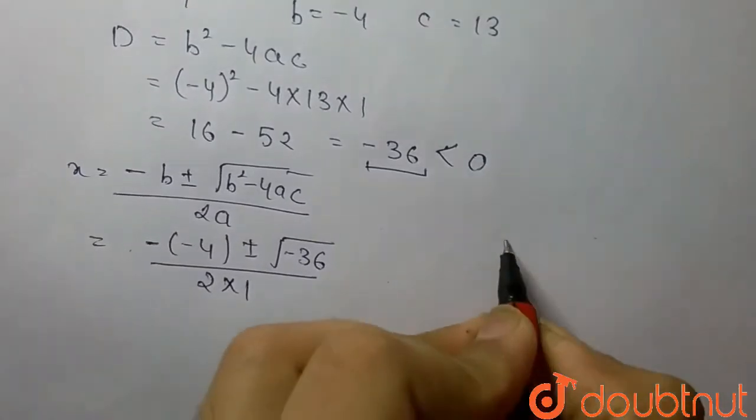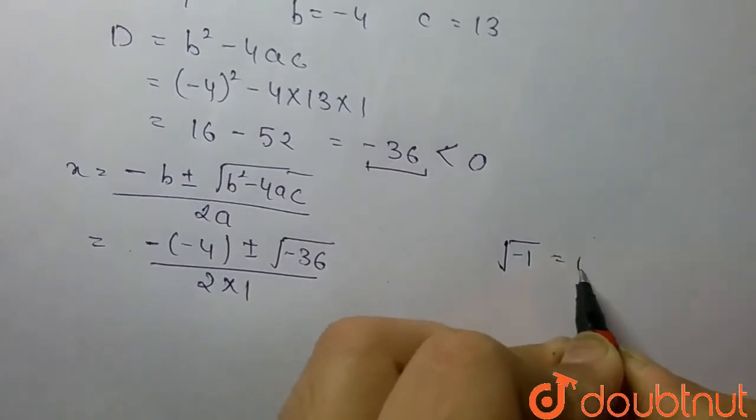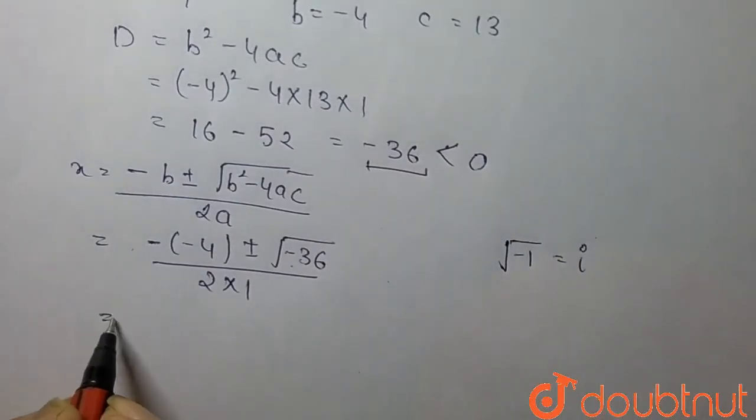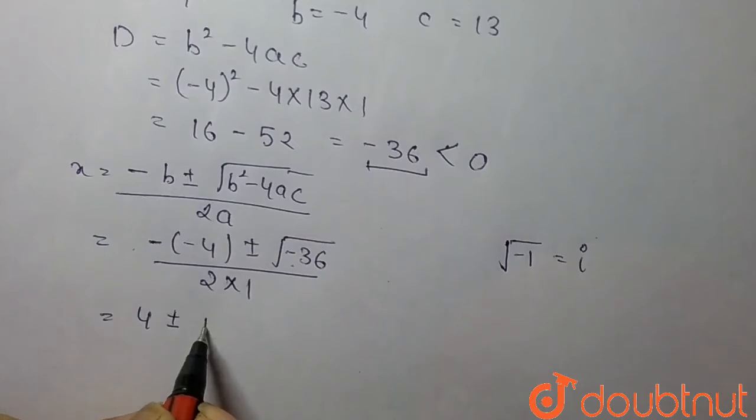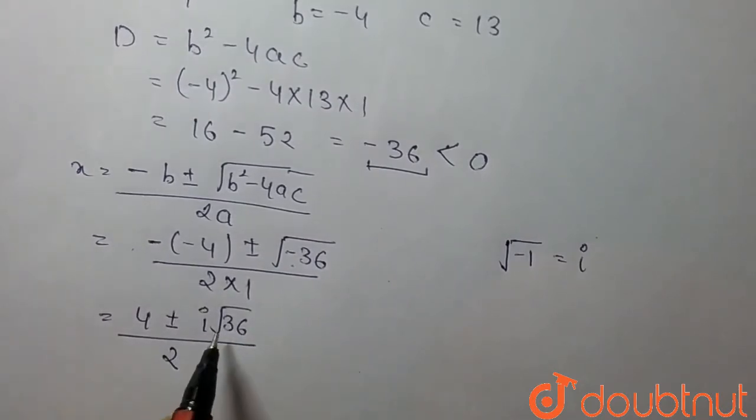And we know that the value of root of minus 1 is i. So we can take it out from the root. So it will become 4 plus minus i root 36 upon 2. And we know that the value of root 36 is 6.